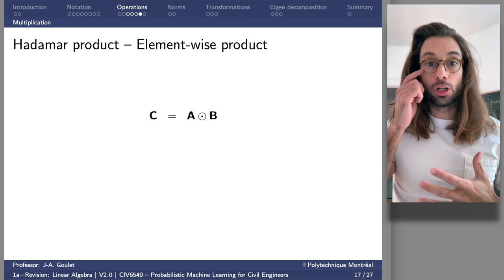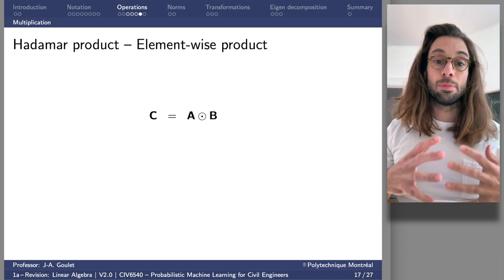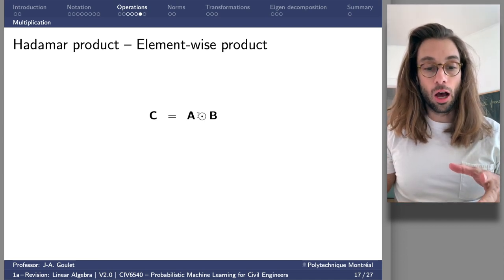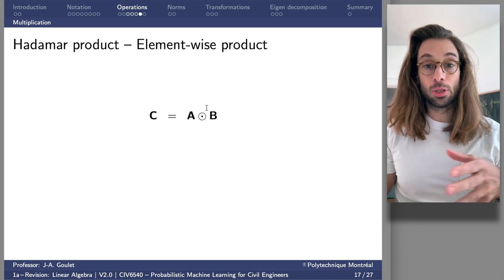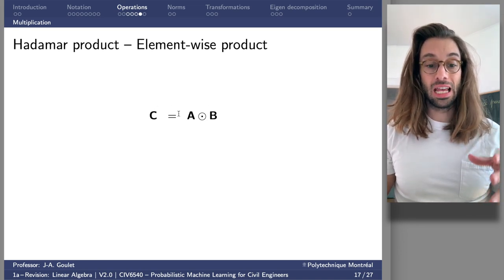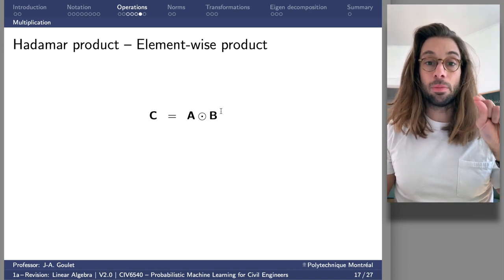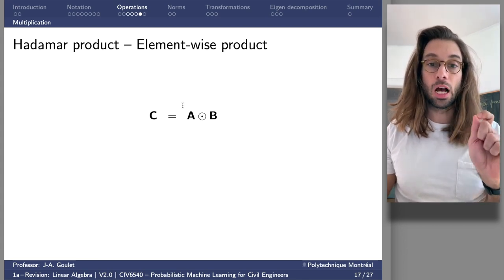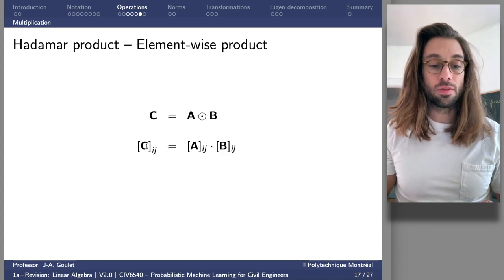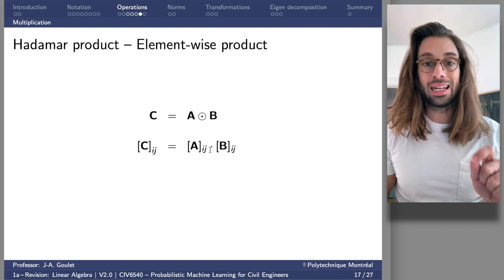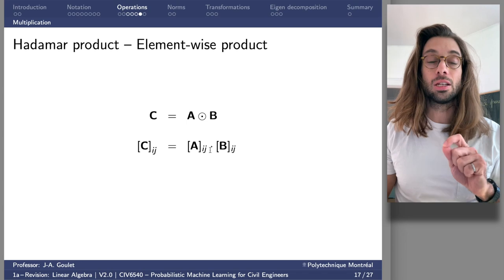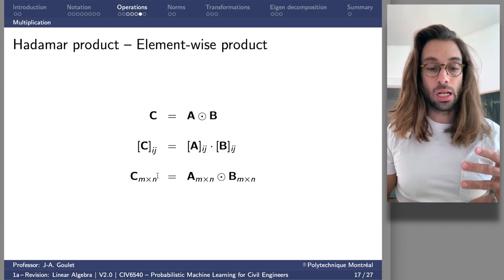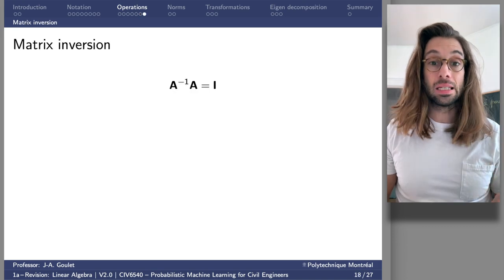There's a special product used especially in neural networks — the element-wise product, also called the Hadamard product. For two matrices A and B of the same size, the operation denoted by a dot inside a circle gives C where each element C_ij equals A_ij times B_ij — simply element-wise multiplication. C has the same size as both A and B.